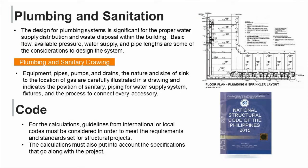For plumbing and sanitation calculations, the design for a plumbing system is significant for the proper water supply distribution and waste disposal within the building. Basic flow, available pressure, water supply, and pipe lengths are some of the considerations for the design system. Plumbing and sanitation equipment — pipes, pumps, and drains — the nature and size of fixtures and the location of gas are carefully illustrated in a drawing, indicating the position of sanitary piping for water supply system, fixtures, and the process to connect every accessory. Guidelines from international or local codes must be considered in order to meet requirements and standards set for structural projects, and the calculations must also account for specifications that go along with the project.